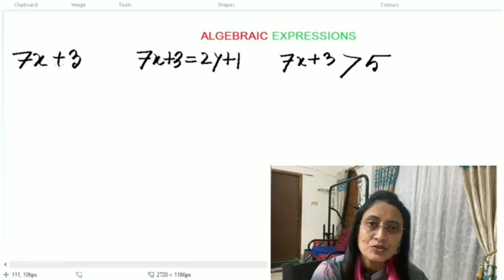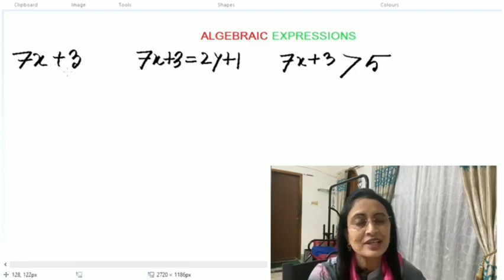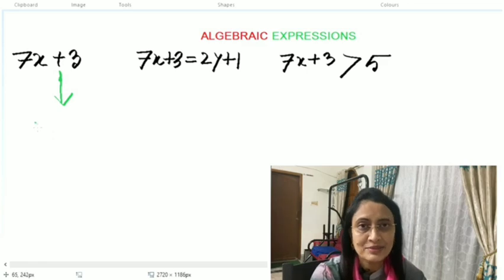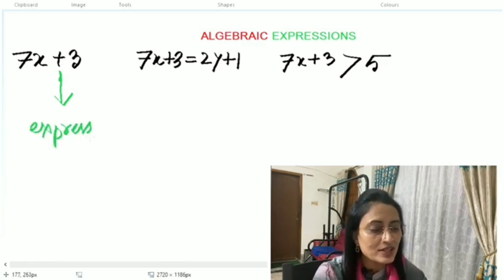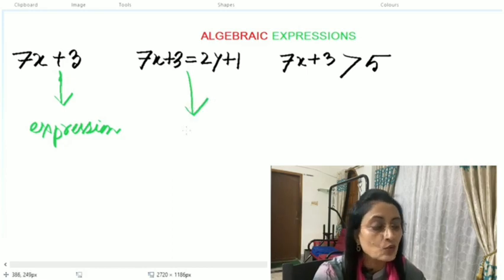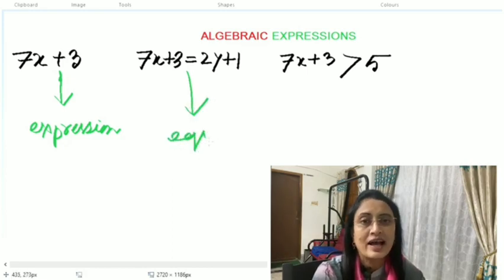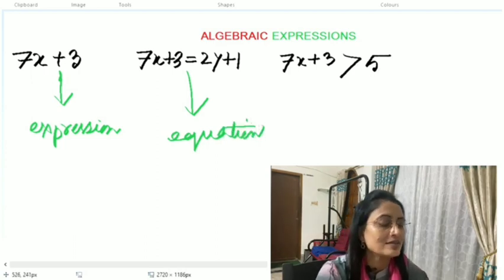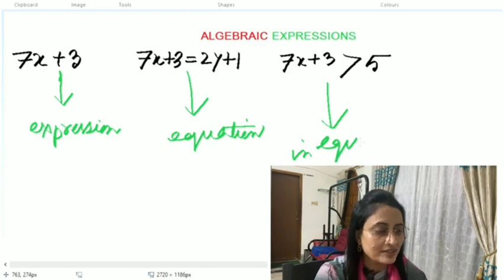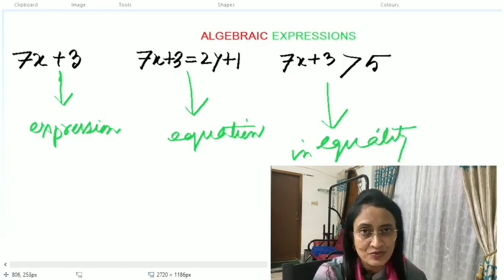Children, remember, we should not confuse algebraic expressions with algebraic equations. In the first case, 7x plus 3 is an algebraic expression with no equal sign. In the second case, 7x plus 3 equals 2y plus 1—one equal sign is there, so it's called an algebraic equation. In the third case, 7x plus 3 is greater than 5—one greater than sign is there, and this is an inequality.